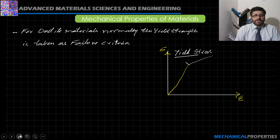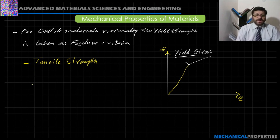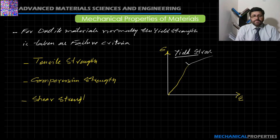The other types of strength are: tensile strength — the maximum value of tensile stress which a material can carry; compressive strength — the maximum value of compressive stress which a material can carry; and likewise shear strength — the maximum value of shear stress which a material can carry.